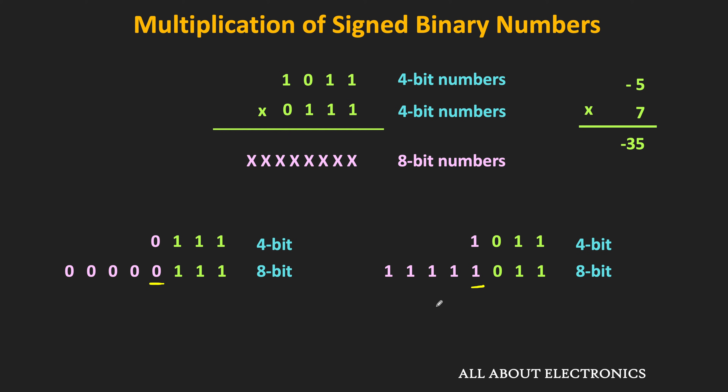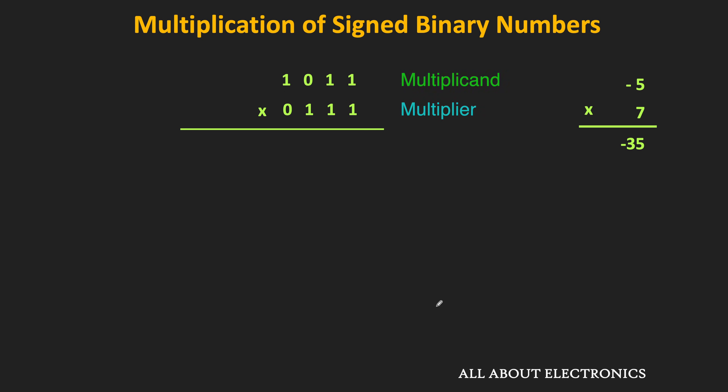Now let us multiply -5 and 7. Starting from the LSB of the multiplier, the first bit is 1. Once we multiply it with the multiplicand, the partial product is the same as the multiplicand, which is 1011. The MSB of this partial product is 1, so we extend the sign of this MSB up to 8 bits. This gives us our first sign-extended partial product.